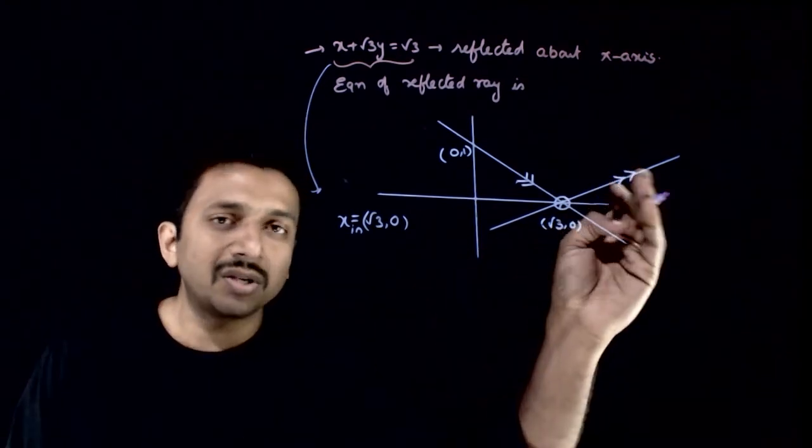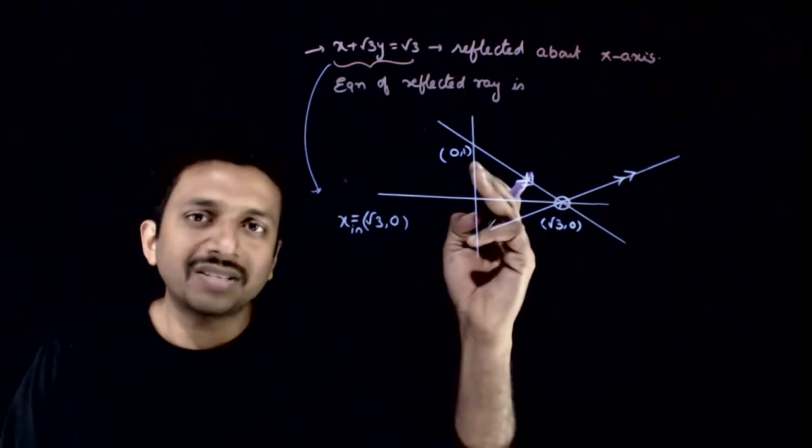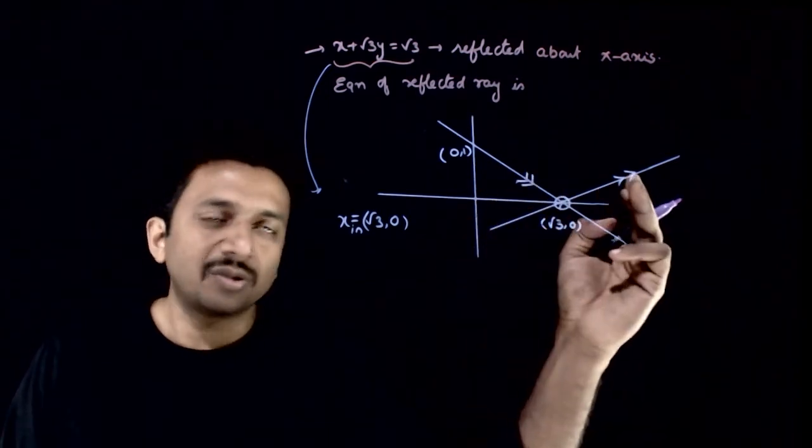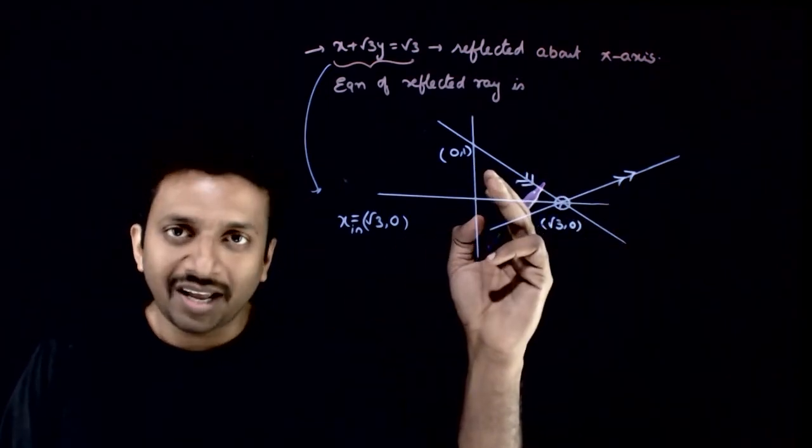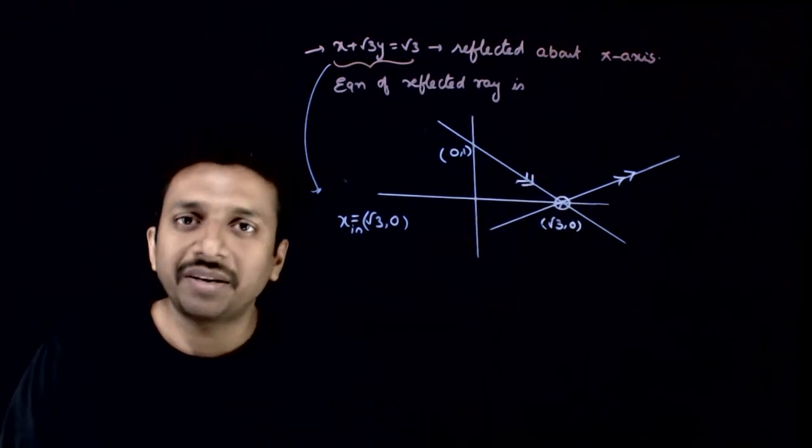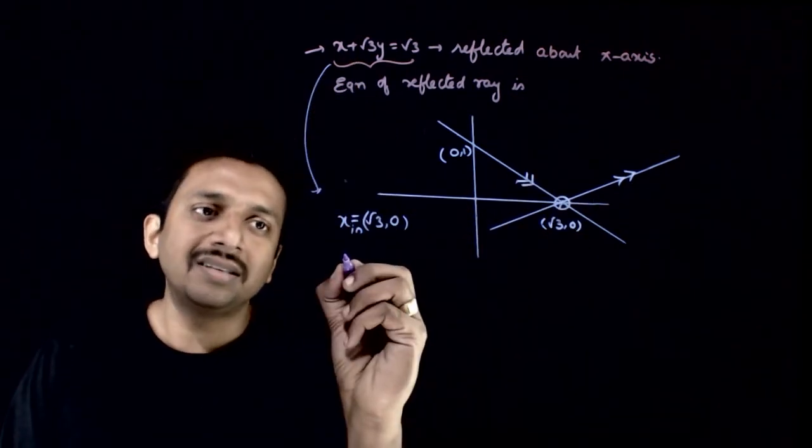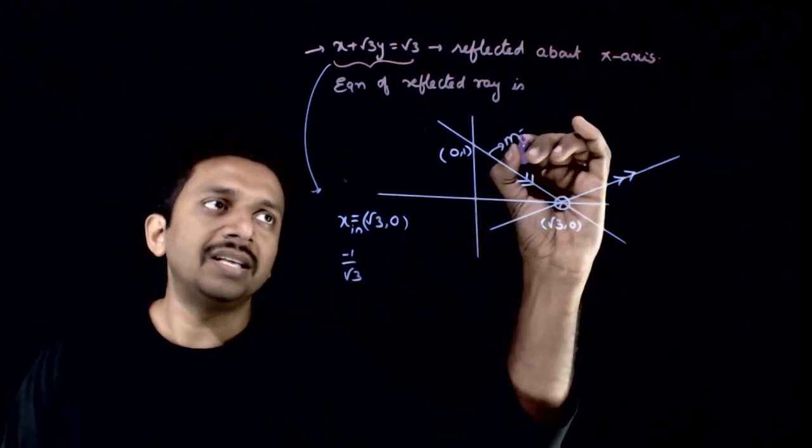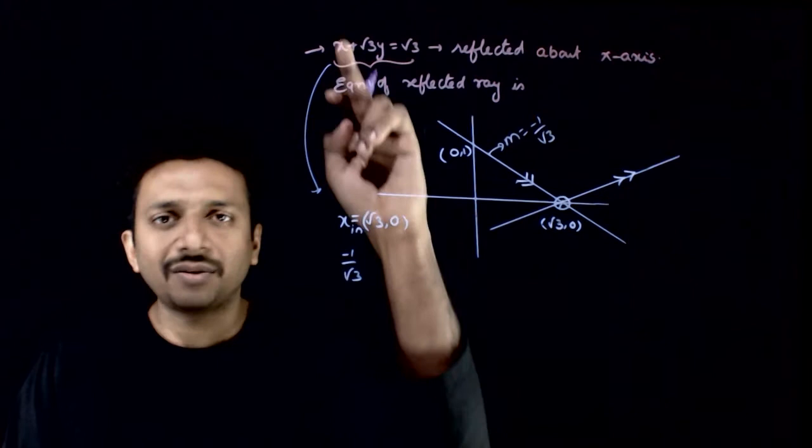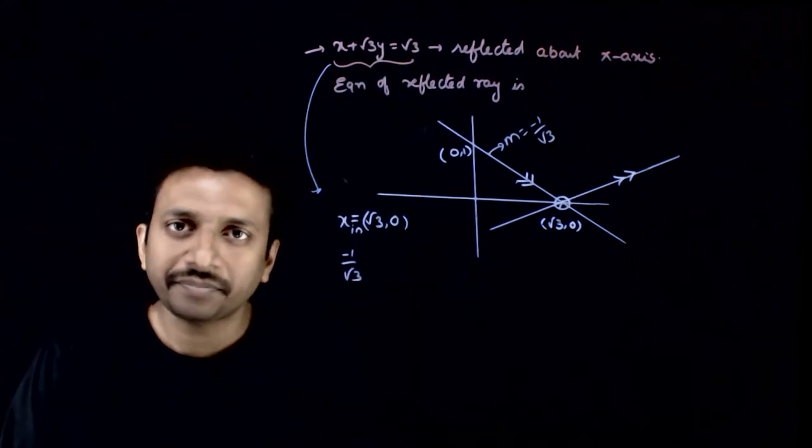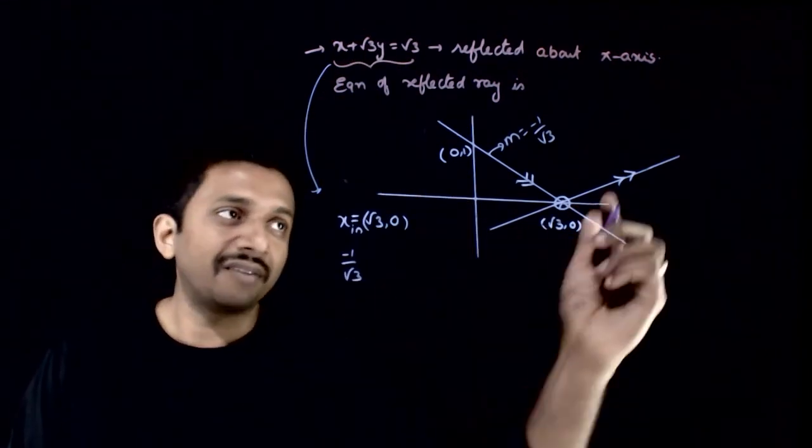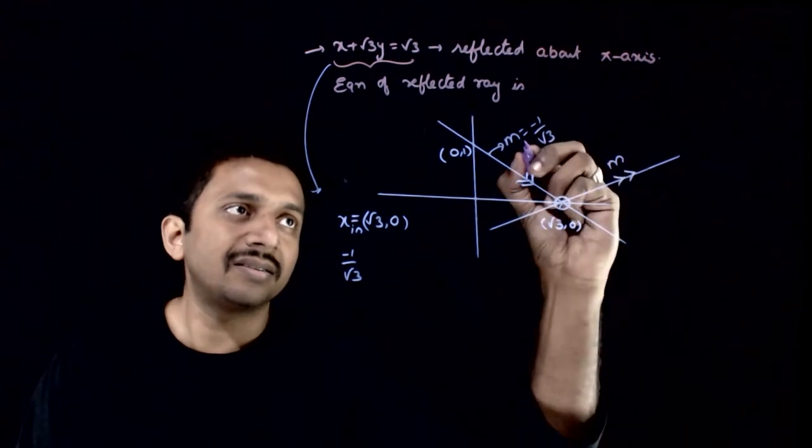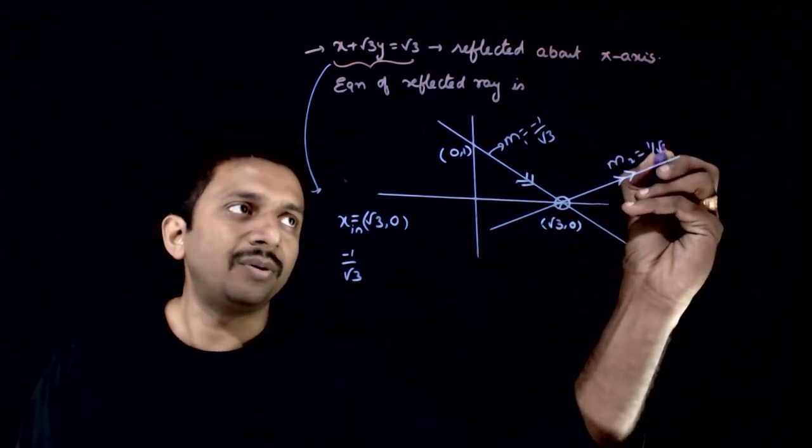What can you say about the slope of this line? The slope will be exactly the same as the slope of the incident ray, but with an opposite sign. The slope of the given line is minus 1 by root 3—minus of x coefficient by y coefficient. So the slope of the reflected ray is plus 1 by root 3.